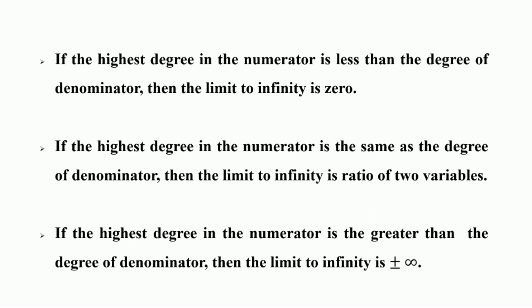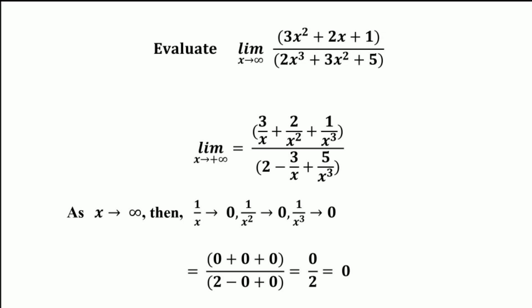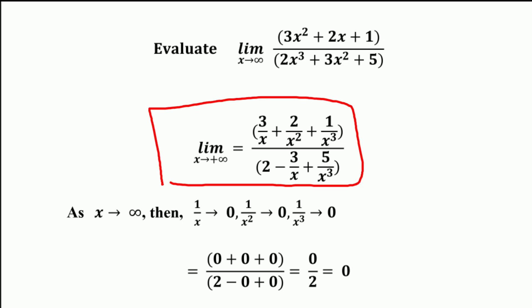We can examine these rules of limit to infinity using numerical examples. Evaluate the limit of (3x² + 2x + 1) / (2x³ + 3x² + 5) as x approaches infinity. First, we divide the numerator and denominator by the highest power of x and then evaluate the function. The highest power of x here is x³, found in the denominator term 2x³. So we divide both numerator and denominator by x³, giving (3/x + 2/x² + 1/x³) / (2 + 3/x + 5/x³).